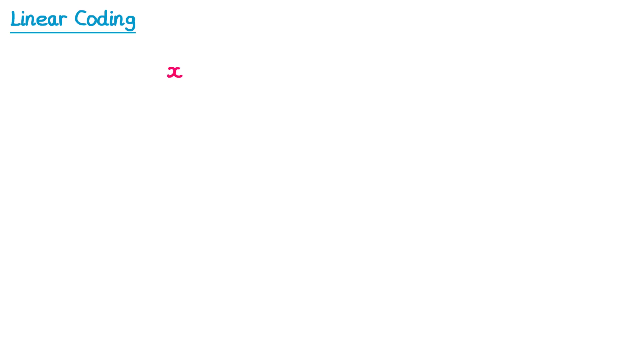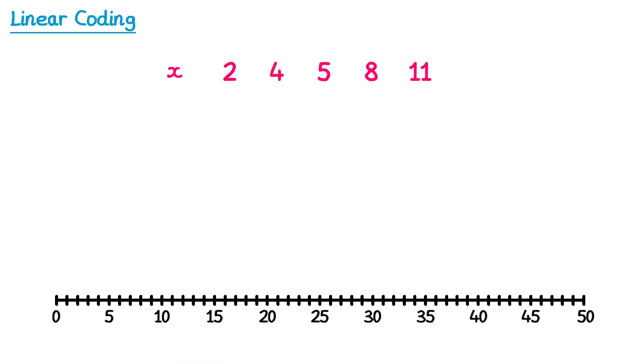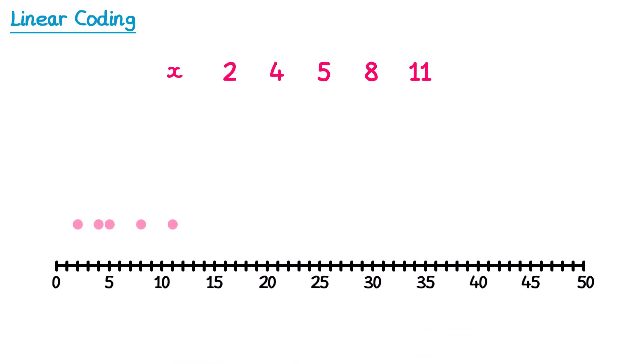Imagine we had a variable, let's say x, and it took the following values. We could represent these on a number line like this. We can also mark on the mean x bar, which is equal to 6 for this set of numbers.